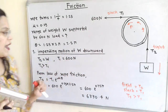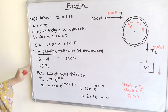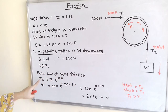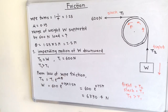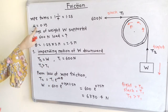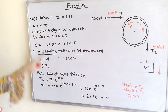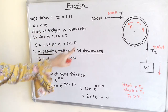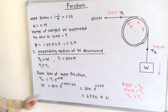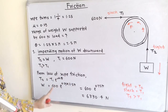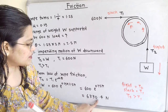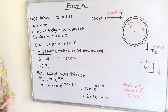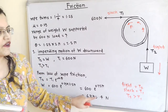Applying the law of rope friction: T2 = T1 × e^(μθ). With μ = 0.29, θ = 2.5π, and T1 = 600 N, we calculate and get W = 6330.4 N. This is the first value in the range.